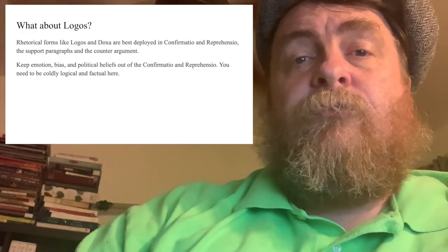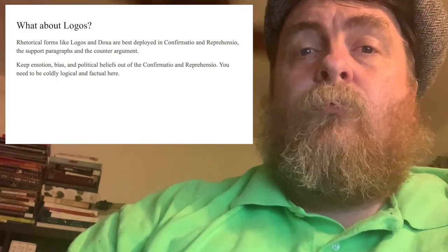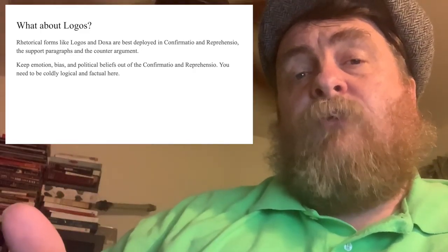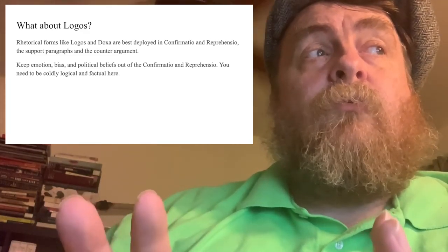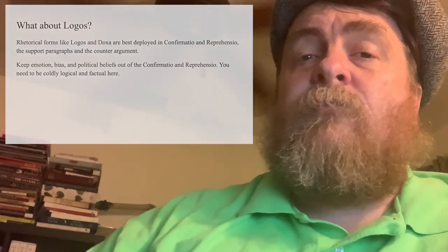So, what about logos? Logos is logic. Rhetorical forms like logos and doxa are best deployed in the confirmatio and the reprehensio — support paragraphs and counterarguments. Keep emotion, bias, and political beliefs out of the confirmatio and reprehensio. You cannot tell me if you like or dislike or disagree with these. And by the way, if you're doing the Coates essay again and revising it, you cannot tell me whether you agree or disagree with Coates. With Aurora, you can tell me you disagree with Aurora, but you can't show emotion or bias in those support paragraphs. You have to be cold, logical, and factual.